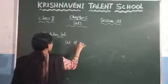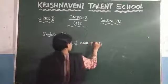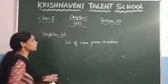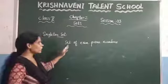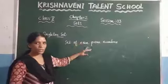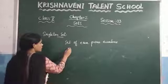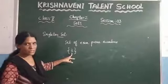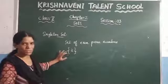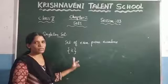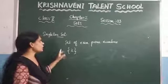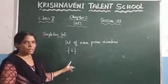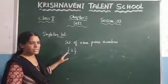Let us consider an example: the set of even prime numbers. You need to write what elements are present in this set. You know that only one prime number is even, which is 2. So you can observe that in this set only one element is present, and we say that it is a singleton set.